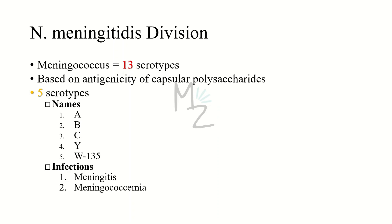Neisseria meningitidis, also called meningococcus, is divided into at least 13 serologic groups on the basis of the antigenicity of their capsular polysaccharides. Five serotypes — A, B, C, Y, and W-135 — are really important because they cause the most cases of meningitis and meningococcemia.